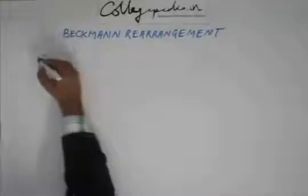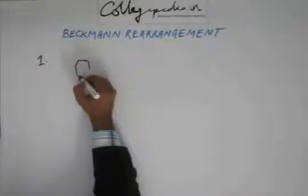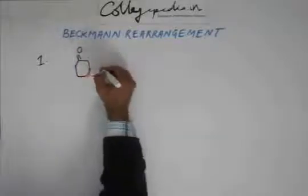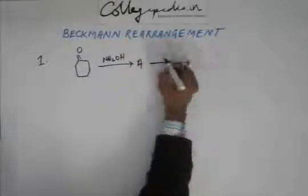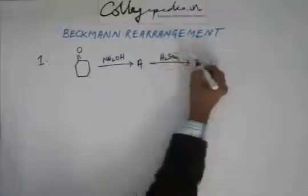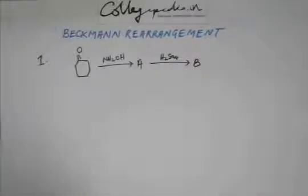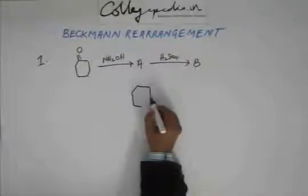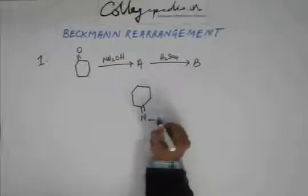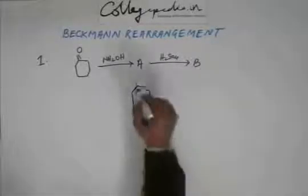Now that you have mastered this reaction, let's solve some more problems. Problem number 1: identify A and B. The first step is addition-elimination reaction — simple addition of hydroxylamine giving you the oxime. So A is simple. This time around there will be no two possibilities because of symmetry — there will be only one compound, no isomers. This is A.